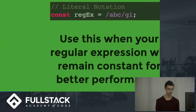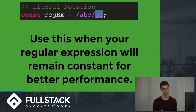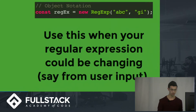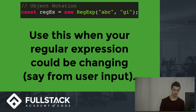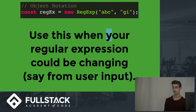First, let's look at the notation. There's literal notation where you can just assign to a variable. You have your slashes which contain the actual pattern, and then after that you have your flags, which give you more advanced options. You want to use this kind of notation when your pattern is going to remain constant. There is also object notation where you use the constructor — you can put your pattern in there and even use variables. You would put your flags in there too. You'd want to use object notation when the pattern could be changing, say from user input.